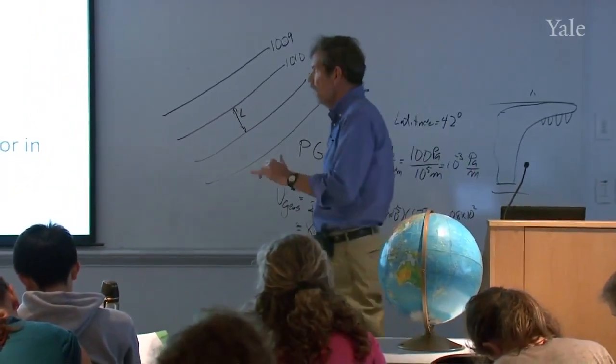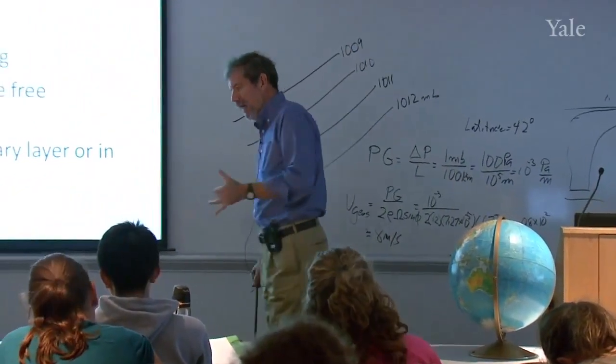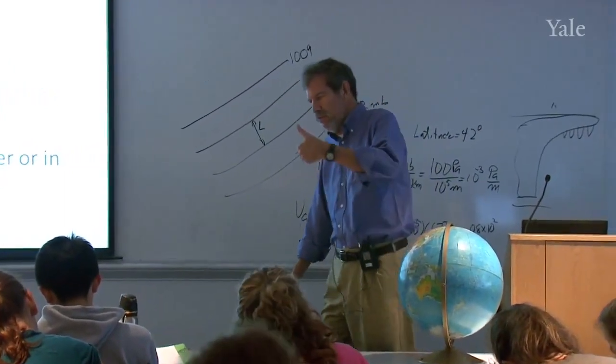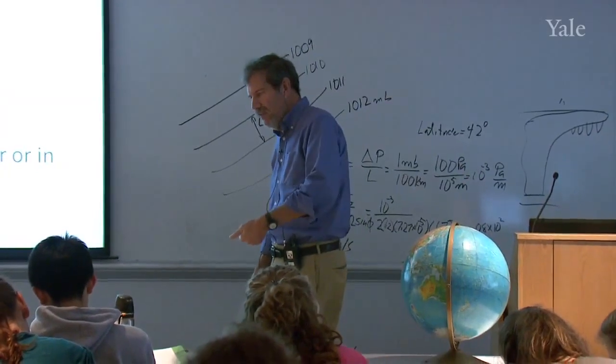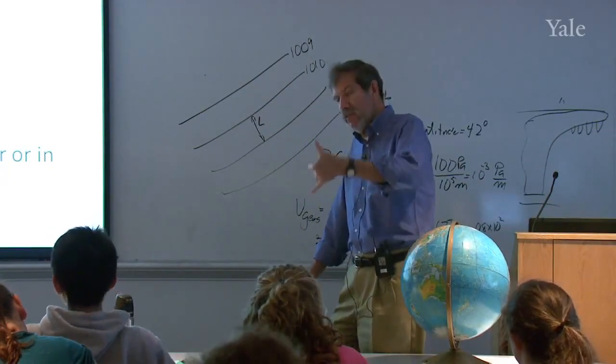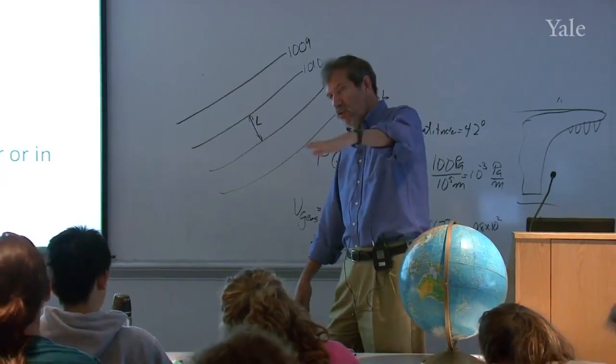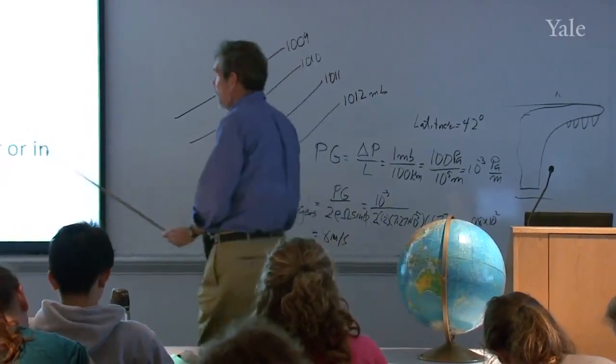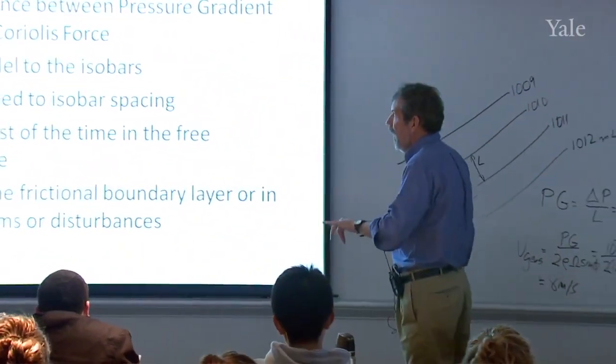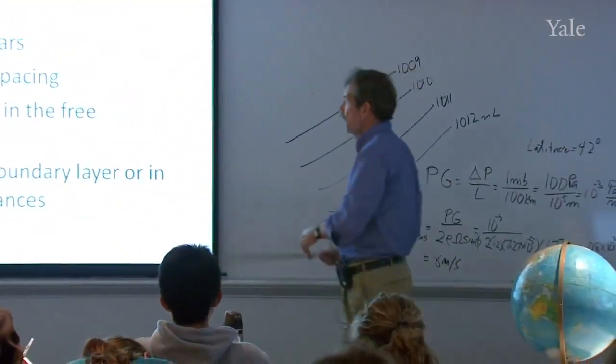Geostrophic balance is a particular kind of force balance. Remember, hydrostatic balance was a kind of force balance. It was a balance between weight and the vertical pressure gradient force. Well, this is more of a force balance in the horizontal. So it's horizontal forces we're talking about. Pressure gradient force and the Coriolis force, when they come into balance, we call that geostrophic.